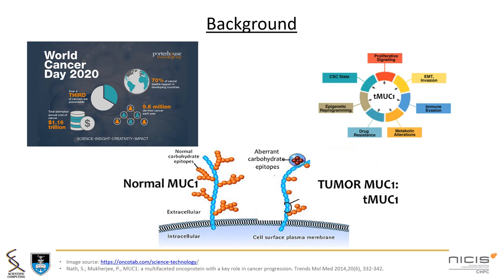Cancer is one of the leading causes of death globally, accounting for 9.6 million deaths in 2020. The hallmarks of cancer, such as immune evasion and drug resistance, are caused by alteration of sugars on the cell surface, particularly the sugars of the MUC1 protein.